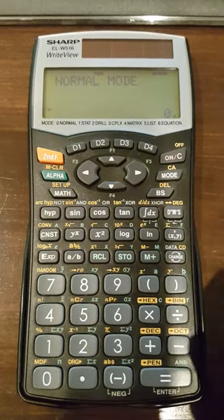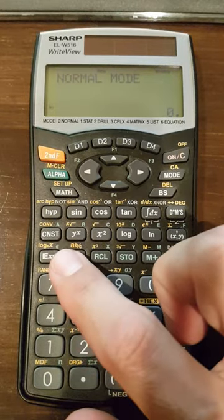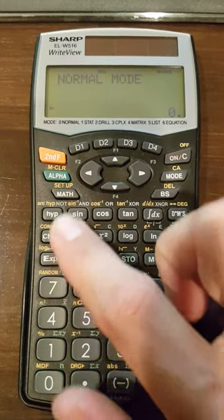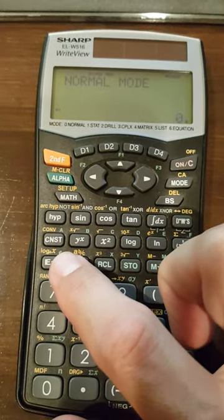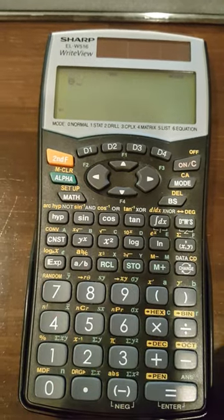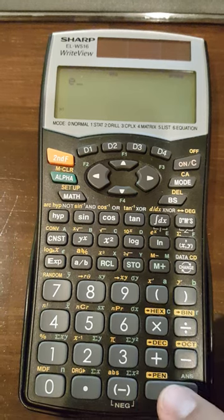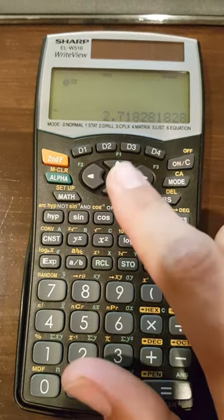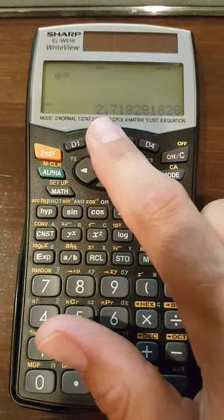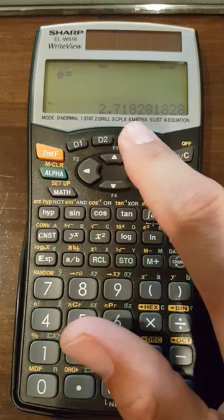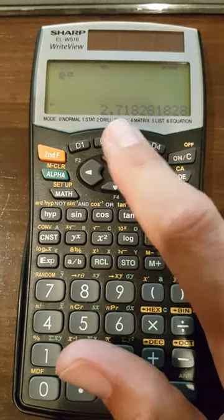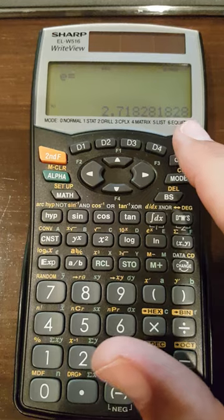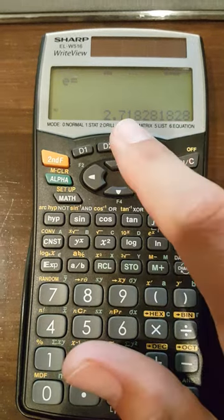So on this particular calculator, if I want to know what E is, I can just use my green alpha button and then hit this key here since the lowercase E is in green, and then hit equals down the bottom. You can see that it gives me this decimal approximation of the number E: 2.71828, etc. Now realize that this number has been rounded, there are more digits after that. My calculator will only give me this many digits.